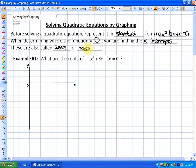So in the case of this first question, where it says, what are the roots of negative x squared plus 8x minus 16 is equal to zero? What that means is, essentially, where are the x-intercepts, or where does this function cross the x-axis?